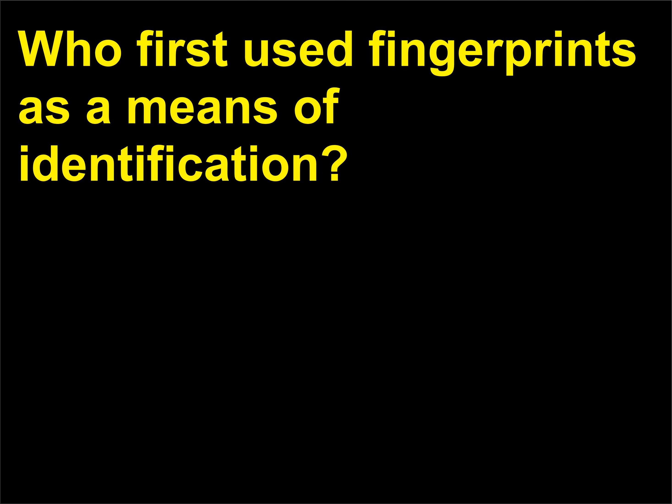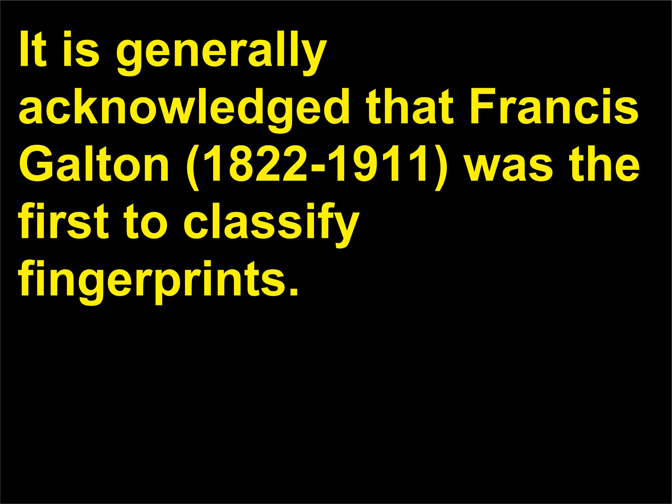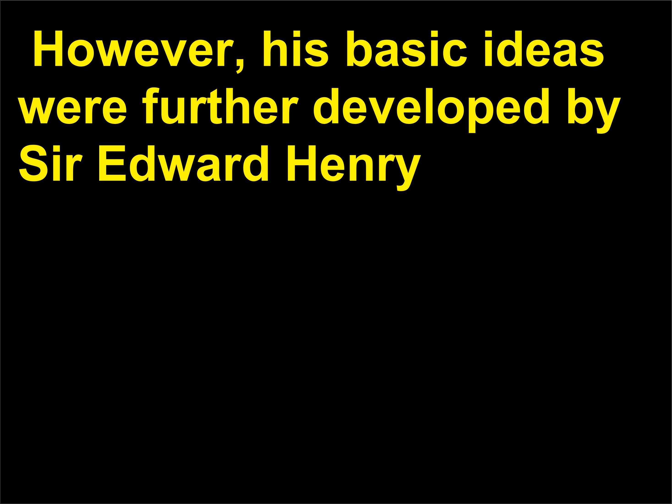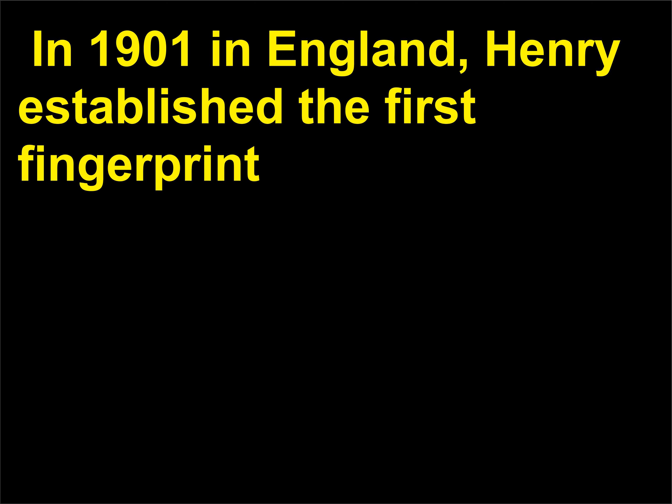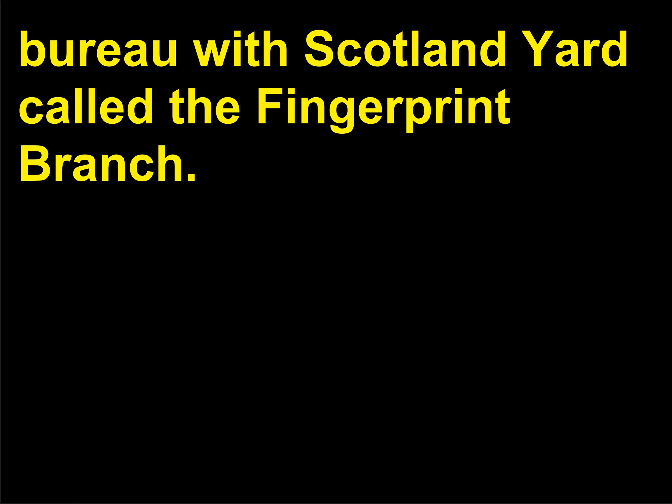Who first used fingerprints as a means of identification? It is generally acknowledged that Francis Galton, 1822–1911, was the first to classify fingerprints. However, his basic ideas were further developed by Sir Edward Henry, 1850–1931, who devised a system based on the pattern of the thumbprint. In 1901 in England, Henry established the first fingerprint bureau with Scotland Yard, called the fingerprint branch.